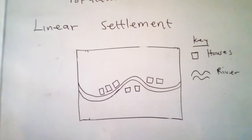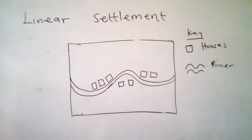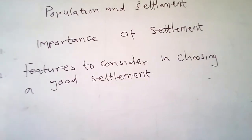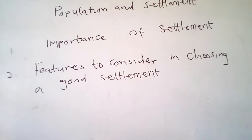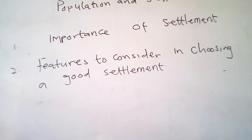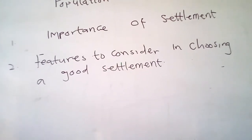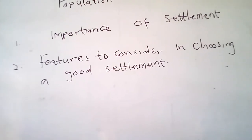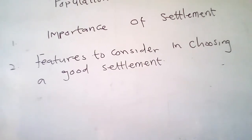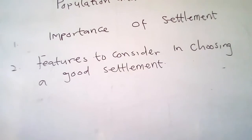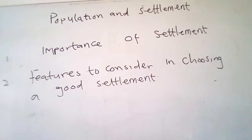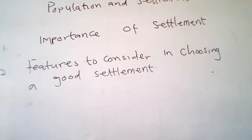The importance of settlements: one, settlement makes it possible for people to live with other people. Two, through settlement, people do not live in vacuum. Three, settlement protects people from bad weather and dangerous animals like snakes. Four, people living together can pool their resources to do business. Five, settlement makes it possible for people to watch out for one another, meaning people live in safety.